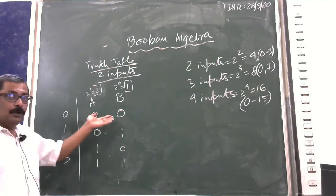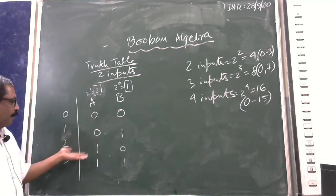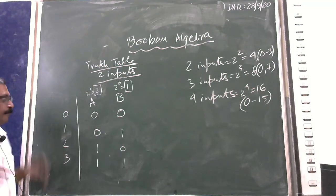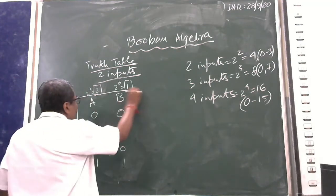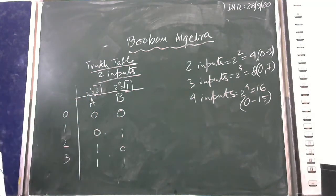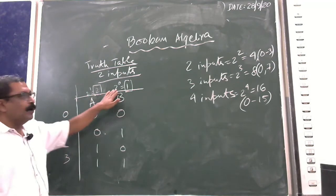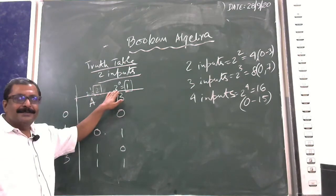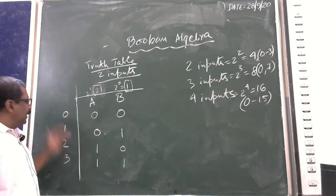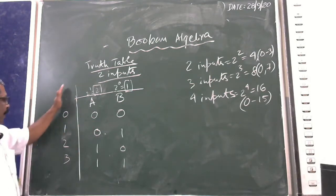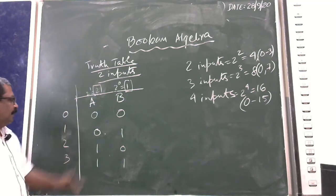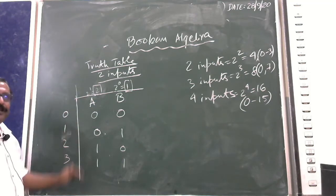The combinations are 0 0, 0 1, 1 0, 1 1. Once you can understand how this works, you can omit the derivation step. Only A, B, and their combinations are required.